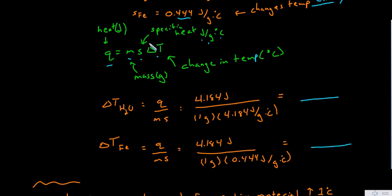Water. Rearrange to find delta T. Delta T is equal to Q over M, S. Water, its change in temperature is Q over M, S. It's 4.184 joules over one gram, over the specific heat,